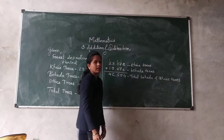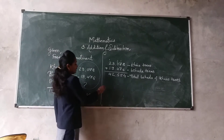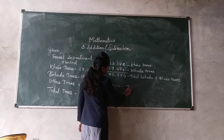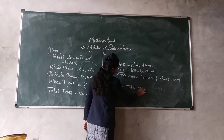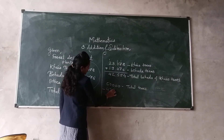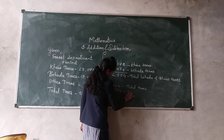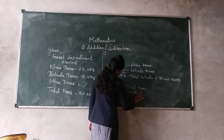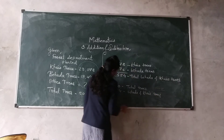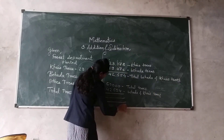We have to subtract the combined Khair and Behera trees from the total number of trees. We subtract the addition result of these two trees from the total number of trees, that is 50,000. These are the total trees minus 42,554, which are the Behera and Khair trees. Do the subtraction by the move method — we have learned the method of subtraction, that is the move method.